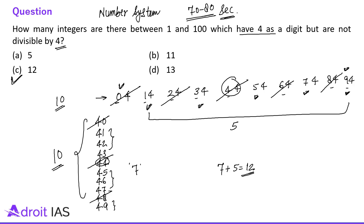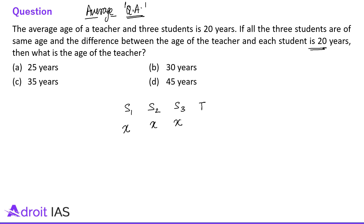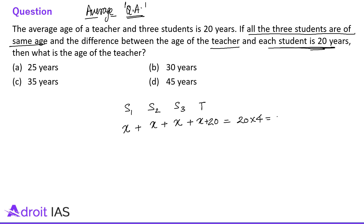Next question: the average age of a teacher and 3 students is 20 years. All 3 students are of the same age and the difference between the age of the teacher and each student is 20 years. Let each student's age be x years and the teacher's age be x + 20. The sum of all four ages is 20 × 4 = 80 years.